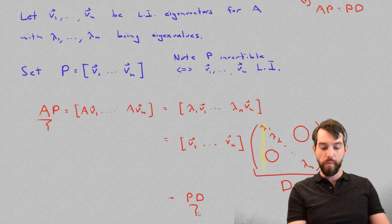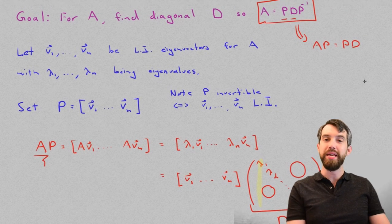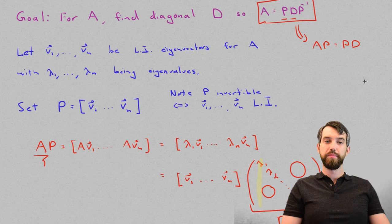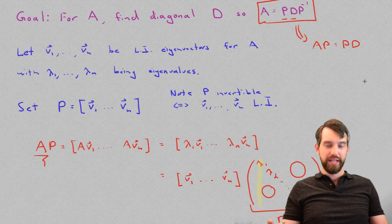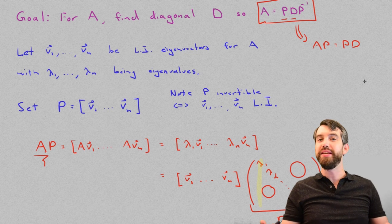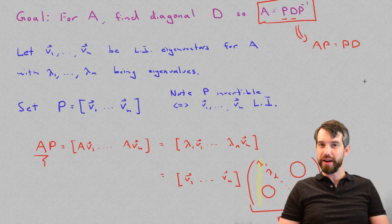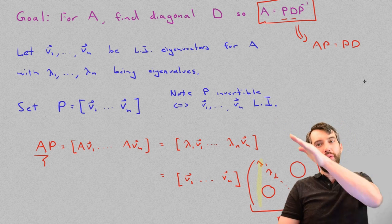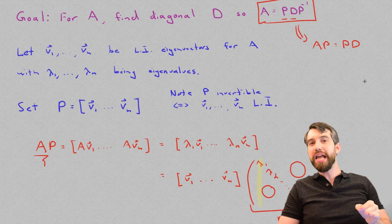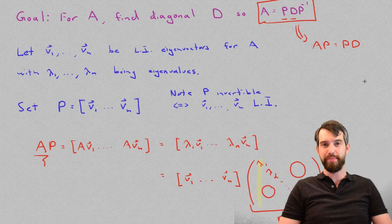Or, alternatively, it obeys the formula that A is equal to PDP inverse. That is, if we can find this linearly independent list of eigenvectors, that's the key task. And I find these linearly independent eigenvectors. Then, there's a diagonal matrix. And it's the diagonal matrix whose main diagonal just consists of those eigenvalues in that specific order.